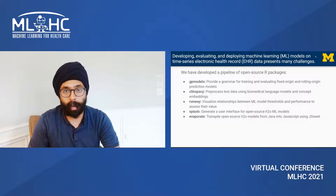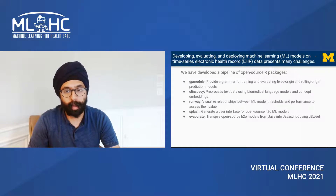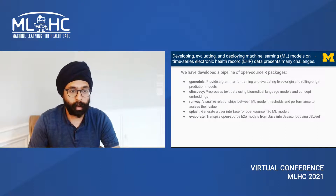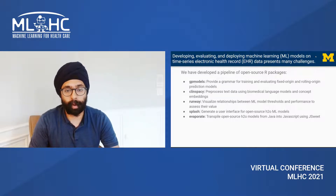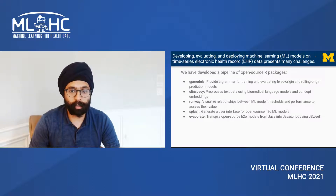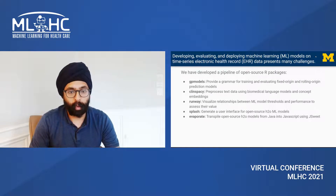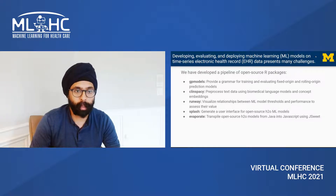These include GP Models, which is a software package that provides a grammar for training and evaluating both fixed-origin and rolling-origin prediction models. ClinSpacey, which helps with pre-processing biomedical text. Runway, which helps to visualize relationships between model thresholds and performance. And then Splash and Evaporate, which are two packages that help productionize models developed using the H2O open-source modeling platform.